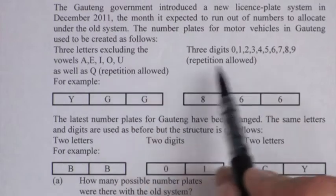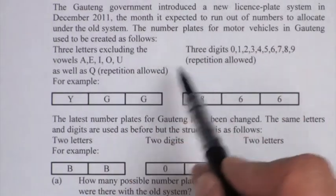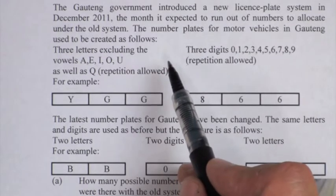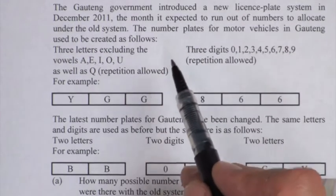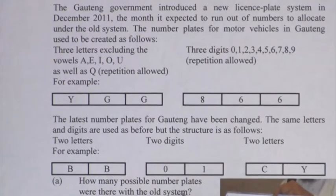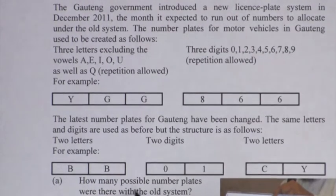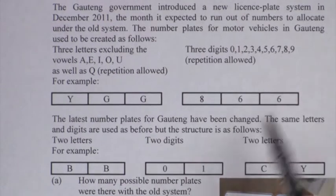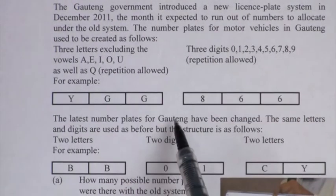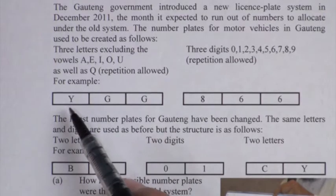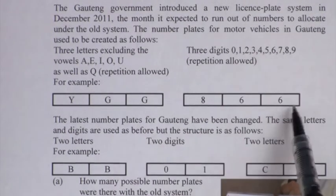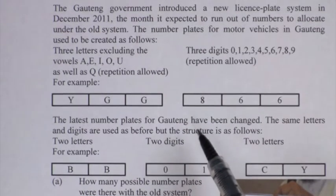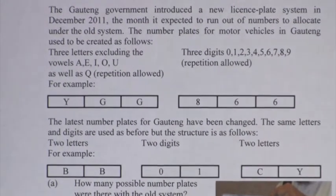So the first question now on this old system, and we're going to discuss the new system after this. How many number plates? And that is the first part of the question. How many possible number plates were there with the old system? So let's do the first part of the question where we discuss three letters, three numbers, how many possible number plates are there?